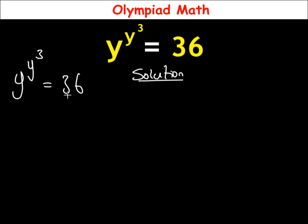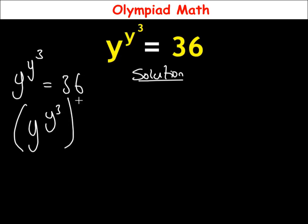To solve this equation, first we are going to cube both sides of the equation. So we're going to have: in brackets, y raised to power y raised to power 3, all raised to power 3, is equal to 36 raised to power 3.